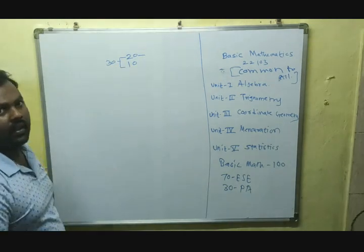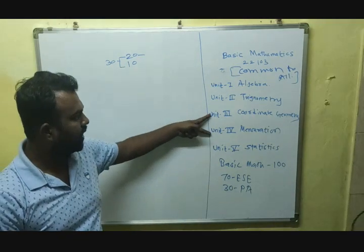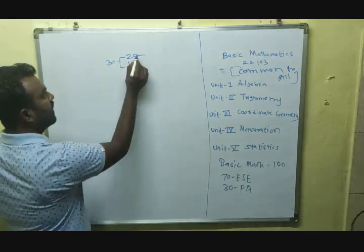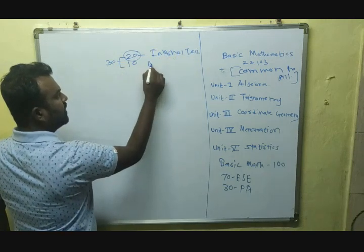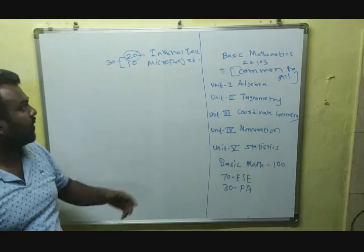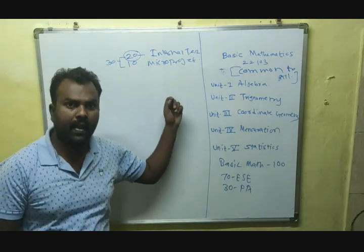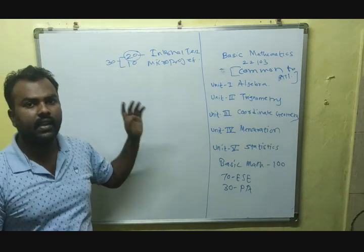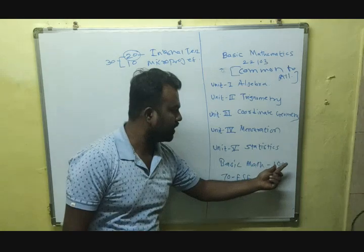The progressive assessment contains a total division of 30 as 20 plus 10. This 20 marks comes from two internal tests conducted on units 1 and 2, and units 3 and 4. The average of these two tests gives 20 marks. The remaining 10 marks is for a micro project, which you have to prepare in your group from a list given in your syllabus. It is an individual plus group activity.